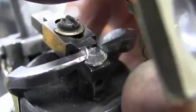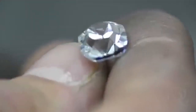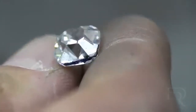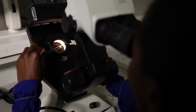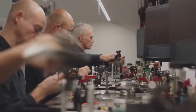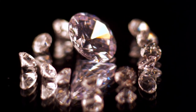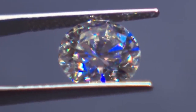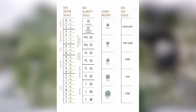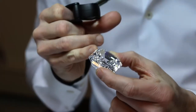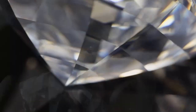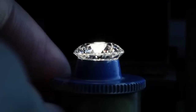Clarity refers to the presence of internal or external flaws within a diamond, known as inclusions and blemishes, respectively. Gemologists use microscopes to carefully inspect diamonds and assign a clarity grade. The Gemological Institute of America (GIA) uses a scale that ranges from flawless to included, with flawless being the highest grade. The fewer and less visible the inclusions, the higher the clarity grade and value of the diamond.